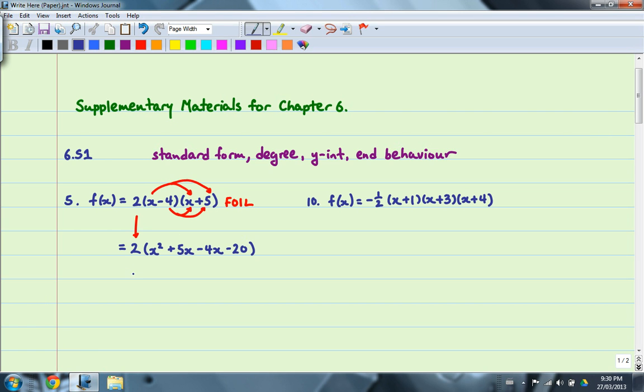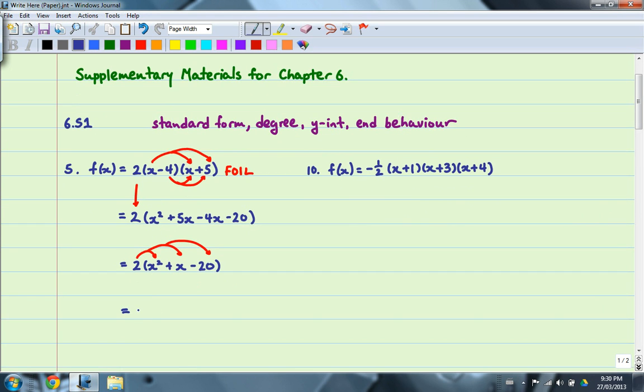Then what you want to do is you combine the like terms. So in this case, I have 5x minus 4x. So that will give me just 1x. And finally, once you have done all that, you can simply take the 2 and distribute it inside of your brackets there. So you'll get 2x squared plus 2x minus 40.